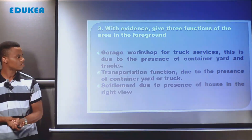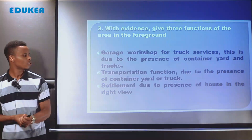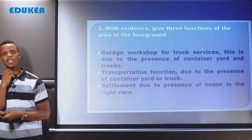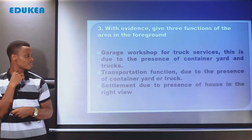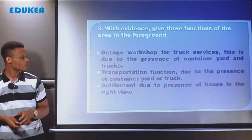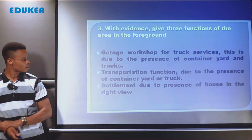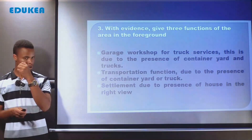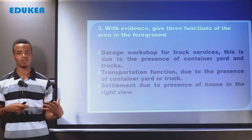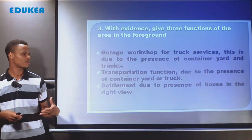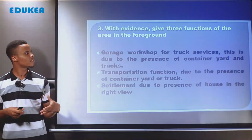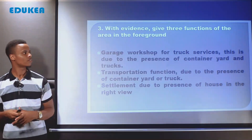The foreground also shows evidence of transportation activities due to the presence of a container yard and trucks — containers are there, and trucks are used to transport goods to other places. The third fraction is settlement, due to the presence of a house visible on the right side of the photograph in the foreground area. This shows that the area also serves as a residential zone. That is how a student may answer this question by giving evidence clearly shown in the photograph.